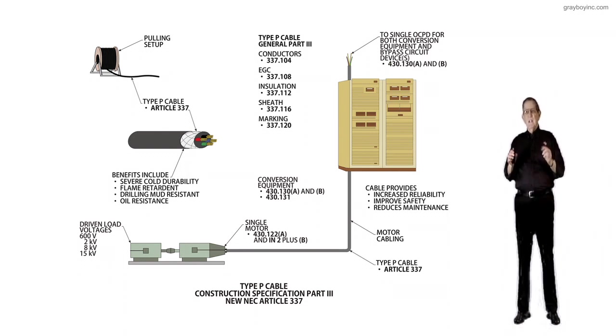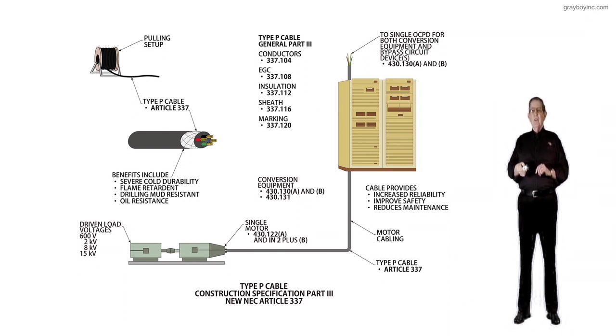Instead of reading the same information again in the purpose of the change, I'm just going to pick up in the last sentence of the paragraph. So count down three lines, and we're going to pick up Article 337 Part 3 covers conductors, equipment grounding conductors,